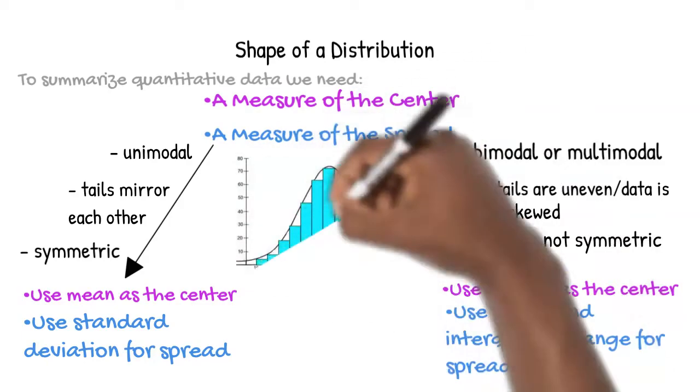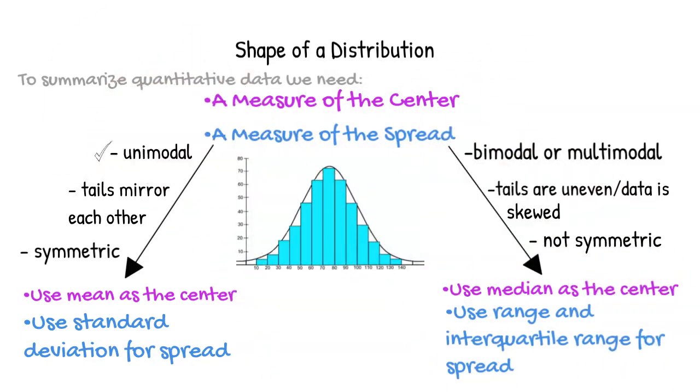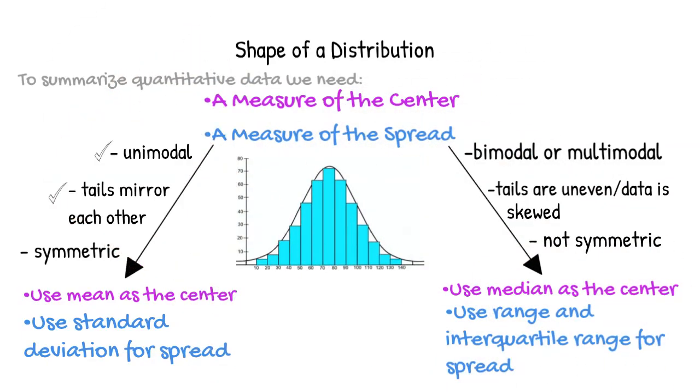In the example we previously looked at, the graph was unimodal, the tails mirrored each other, and the graph was symmetric. So we would summarize this data using mean and standard deviation.